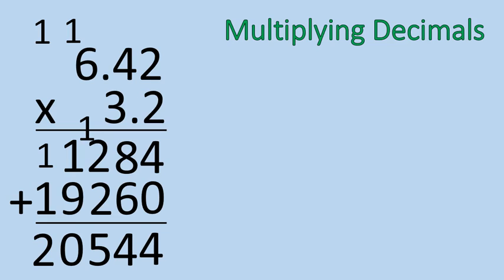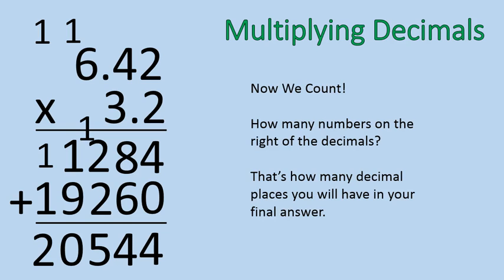Now what I'm going to do is counting the decimals. Now how do we count the decimals? You count the number of numbers on the right of the decimal in the original question, so 6.42 times 3.2. I count those numbers, 1, 2, 3. All right? There are three numbers there on the right of the decimal, so I'm going to have three numbers here on the right of the decimal for my final answer. That's it.